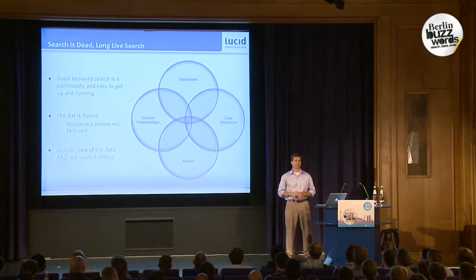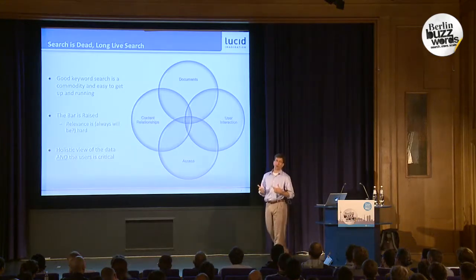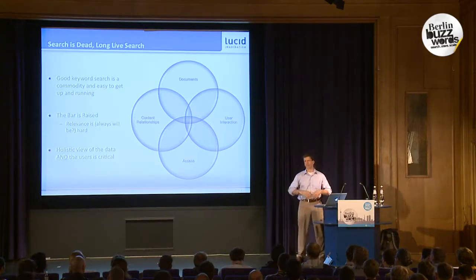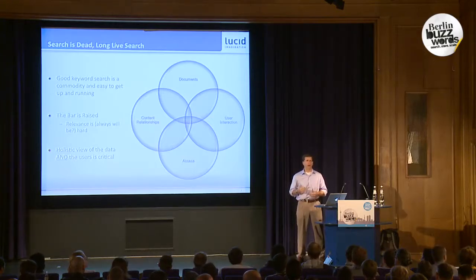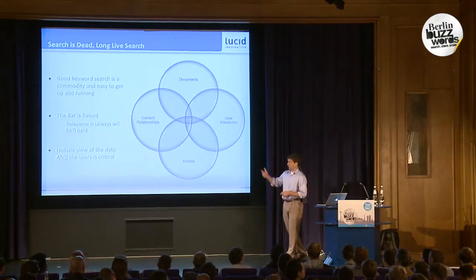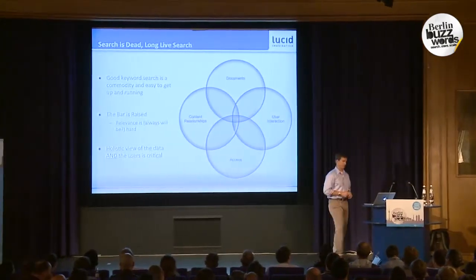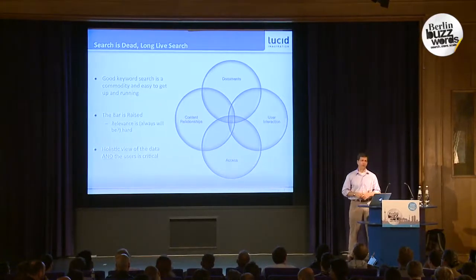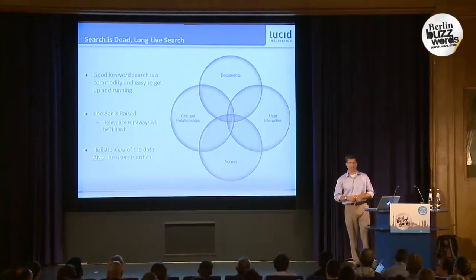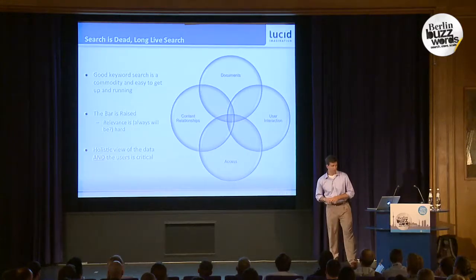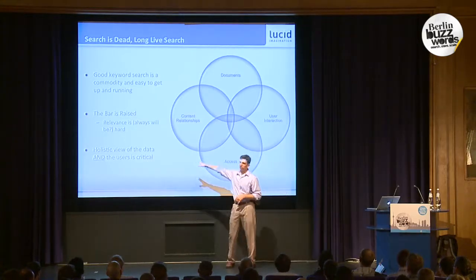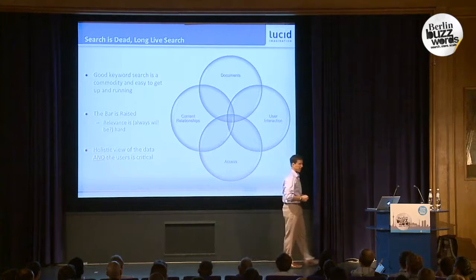Relevance is hard. Show of hands — how many of you, once you have a stable system, spend more than 50 percent of your time tuning and tweaking to get better relevance? A good chunk of you. Setting up your fields and getting all the data are pain points, but what your business people are always asking is how do I get better relevance. Search by its very nature is a subjective experience, so we're probably always going to be in this mode of having to tune the system.